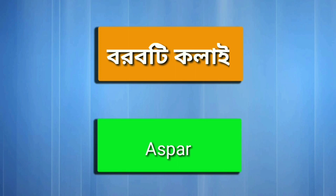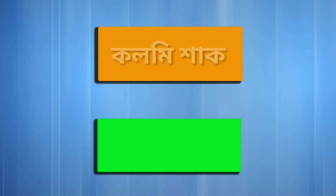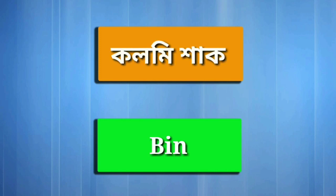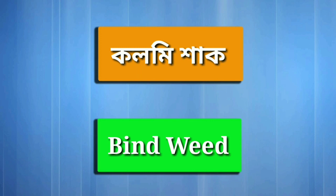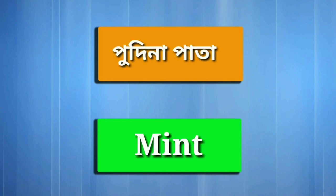Borbotikolai — Asparagus Bean. Kolmishak — Bindweed. Pudinapata — Mint.